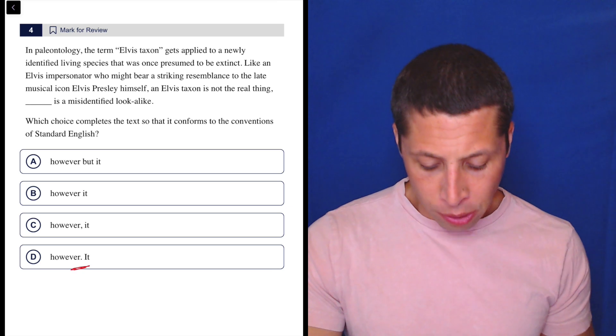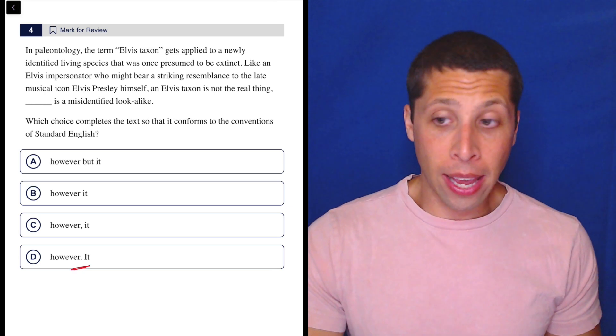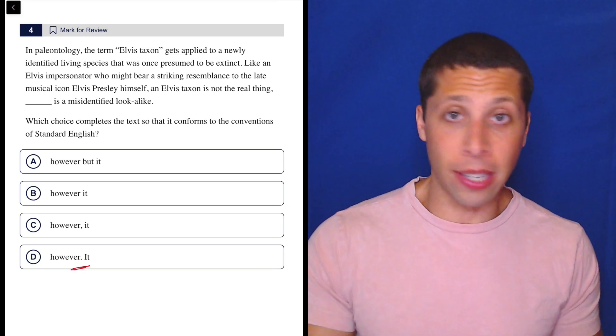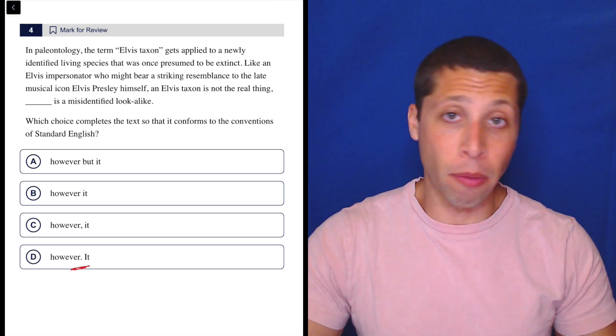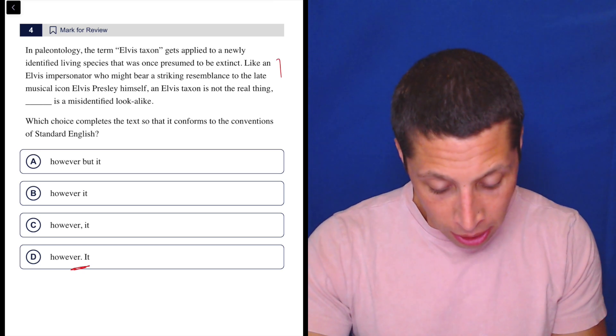The thing I'm drawn to first is we have a period in choice D, and the period is a very strict punctuation mark. It needs to separate two complete sentences. So if we have two complete sentences, that's it. Game over. It's got to be D. So let's check for that first, starting here.